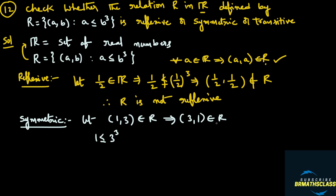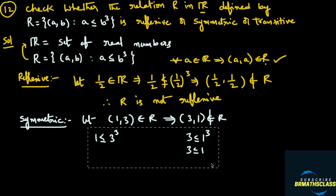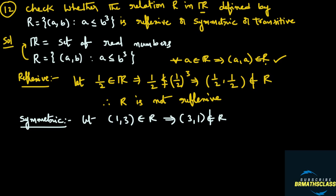To check if (3, 1) is in the relation, we verify if 3 is less than or equal to 1 cube. 1 cube is 1. Is 3 less than or equal to 1? Clearly, 3 is greater than 1. That means the ordered pair (3, 1) does not belong to the relation — it fails to satisfy the symmetric property. Therefore, the relation R is not symmetric.